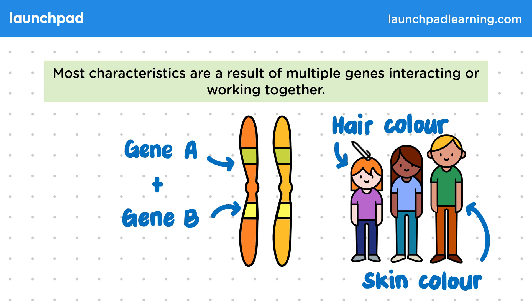Even so, you don't need to know any specific examples of characteristics controlled by more than one pair of alleles for your exam.